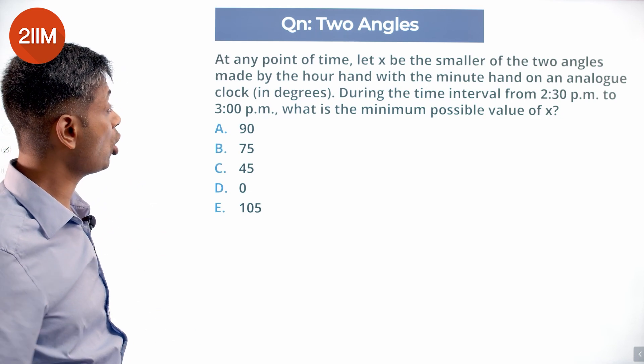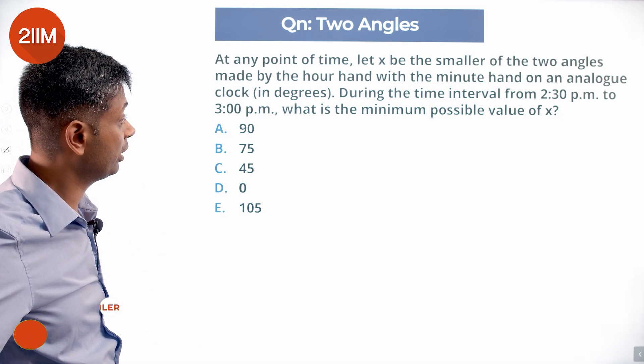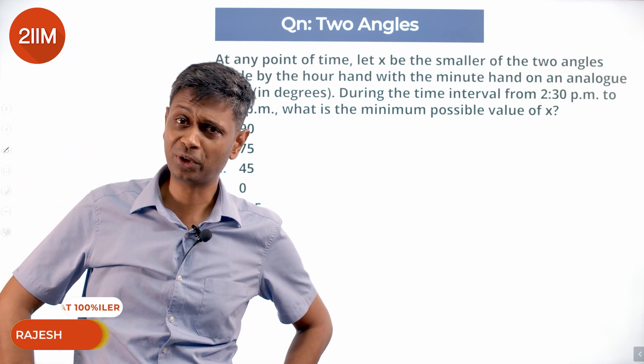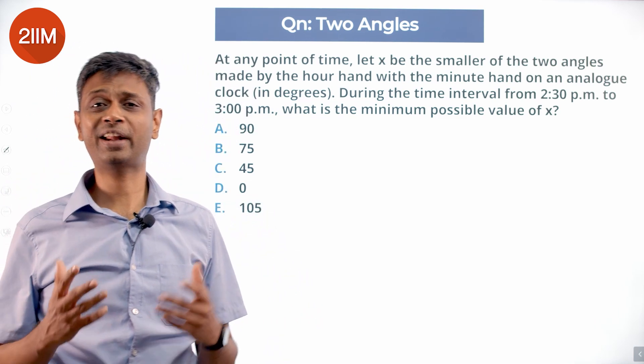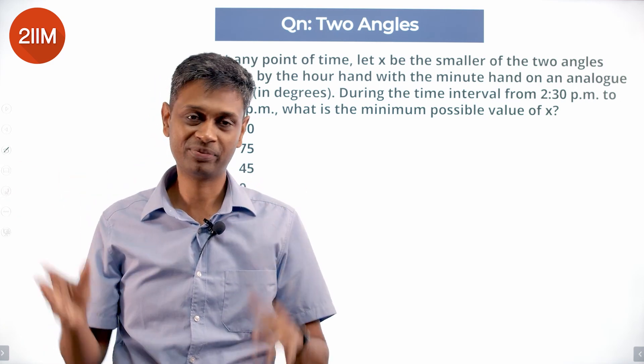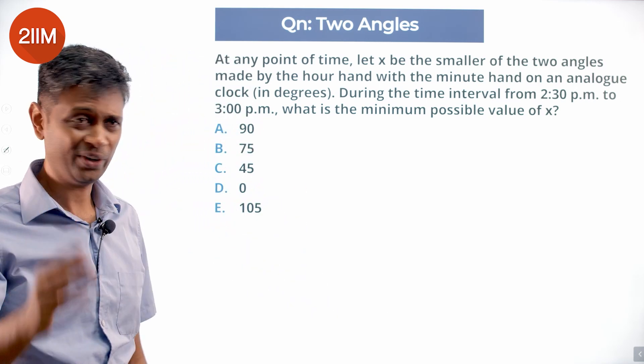At any point of time, let x be the smaller of the two angles made by the hour hand with the minute hand on an analog clock. First I had trouble figuring out what an analog clock was. An analog clock is a regular clock that we have, when the digital clock says 3:05.